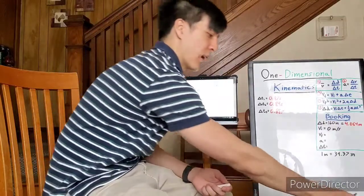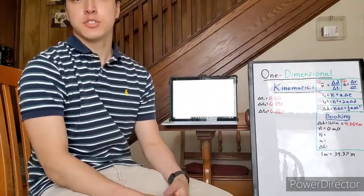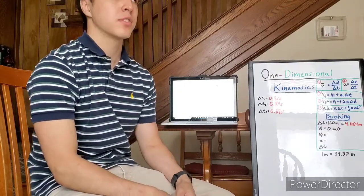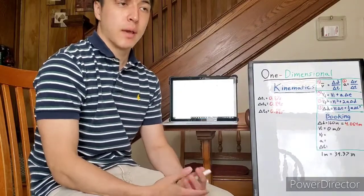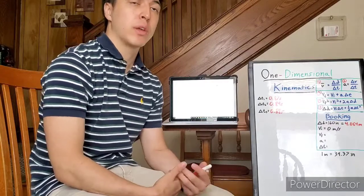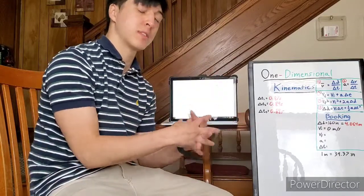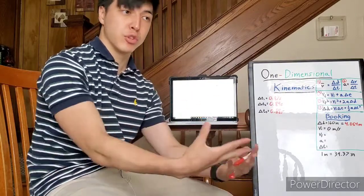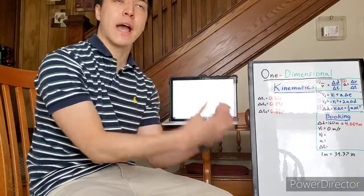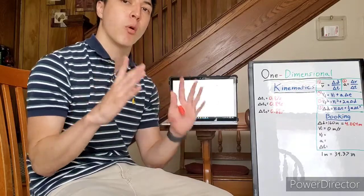Hey guys, Jimbo the Science Guy here, back with the second part of the video. I want to start by saying that in experiments there are human errors. In chemistry there's something called a theoretical yield and an actual yield when you mix the reactants to create the product. There's a theoretical yield of what you should produce, and then there's an actual yield of what you actually produce, and then there's a percent margin of error.